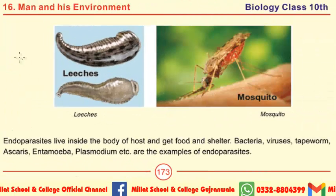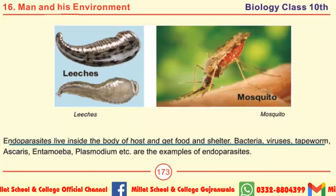The next definition is of endoparasites. Endoparasites live inside the body of the host and get food and shelter. Examples are bacteria, viruses, tapeworm, ascaris, entamoeba, plasmodium, etc. The examples of endoparasites may also be selected for important MCQs.